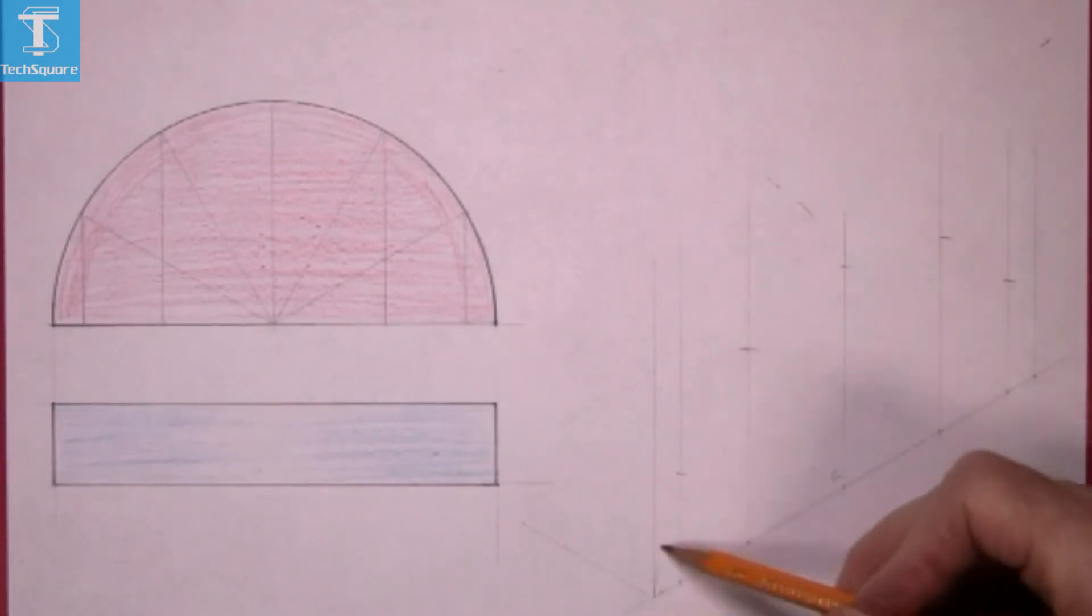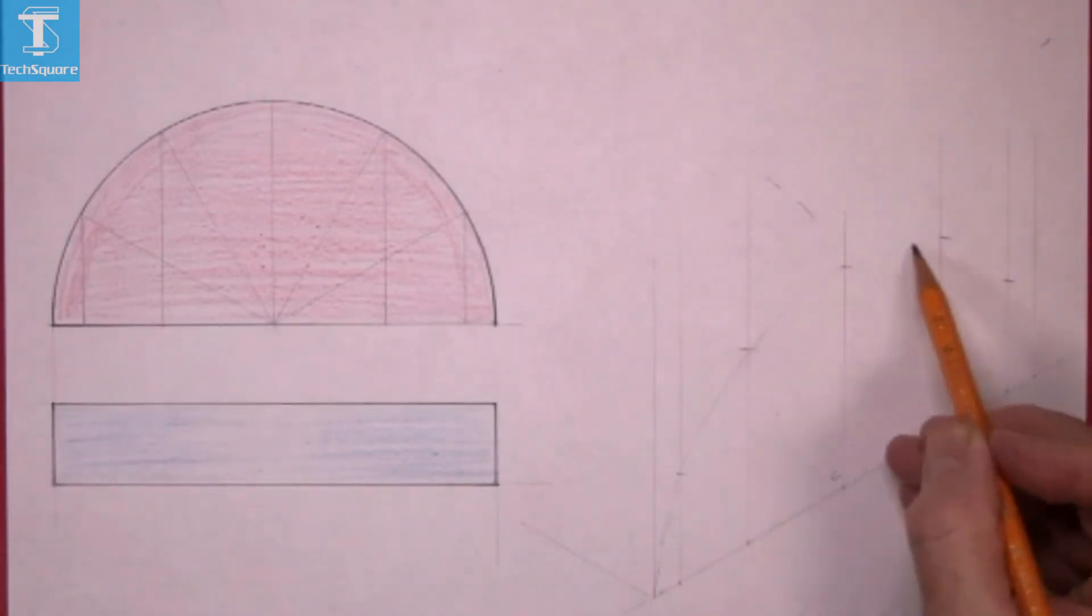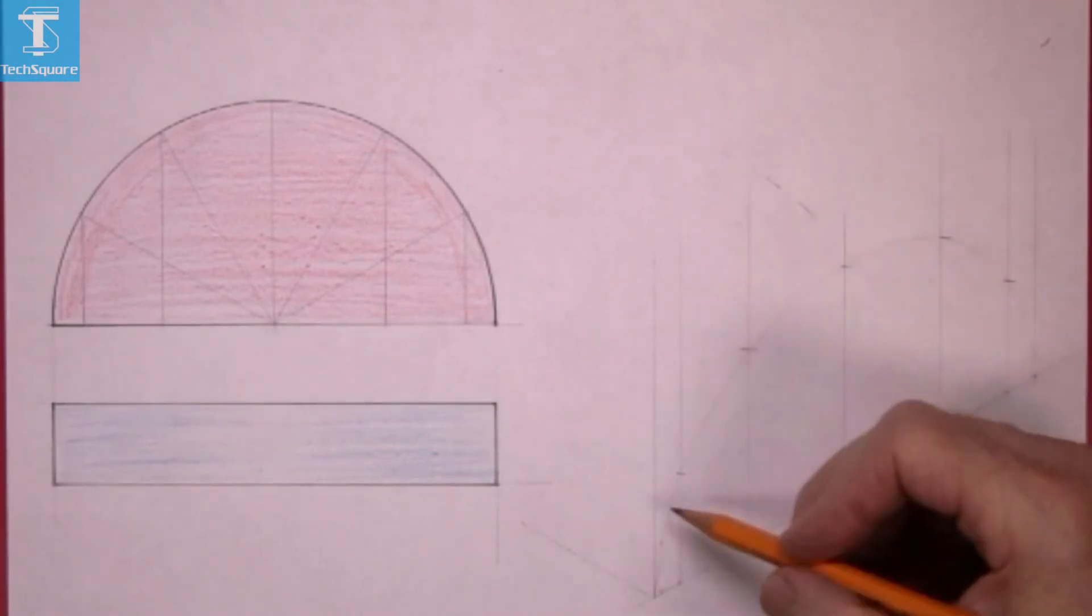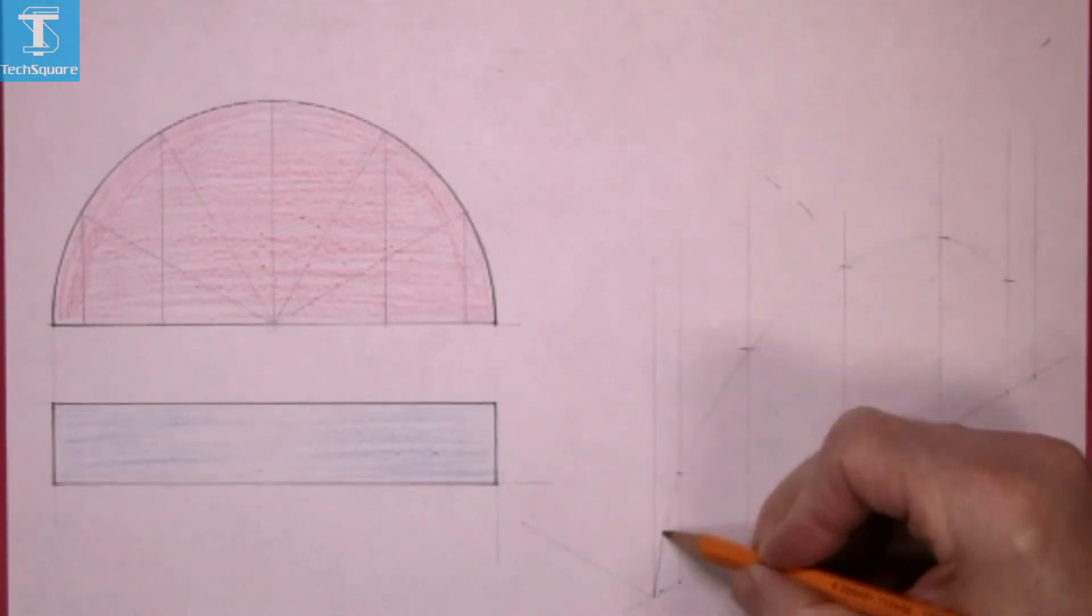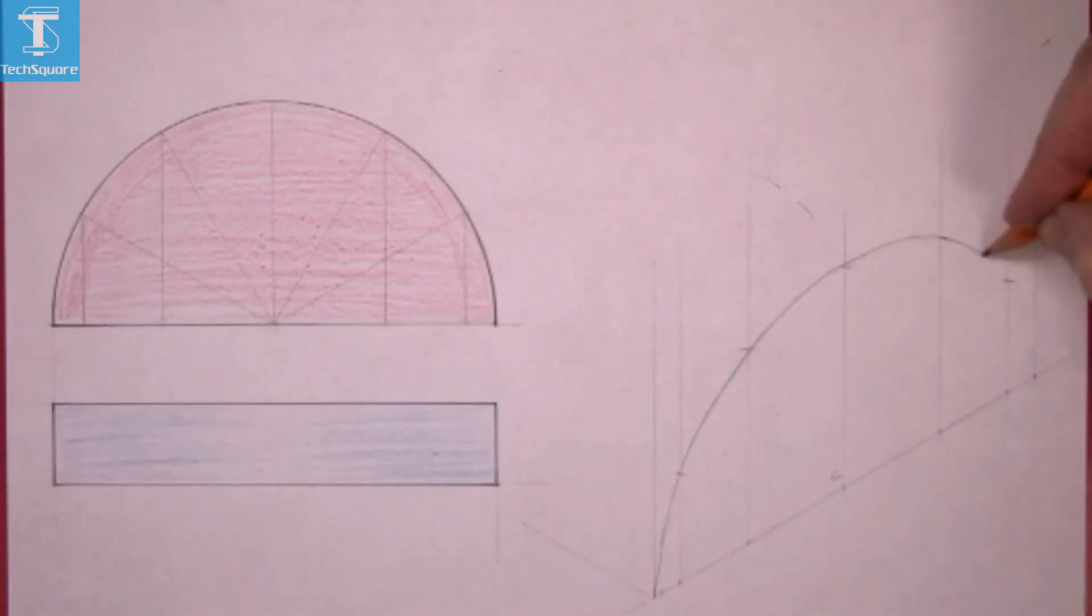Just draw through those points, a smooth curve, and just line that in. And that gets the front surface of this piece of timber done.